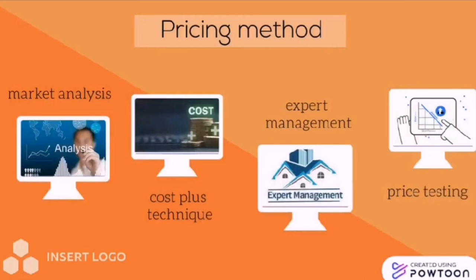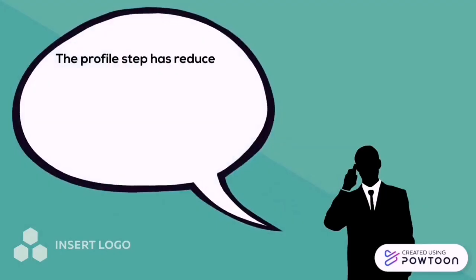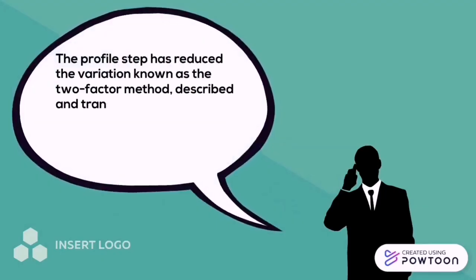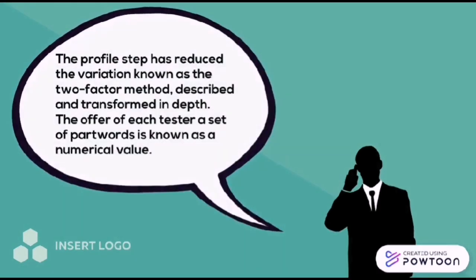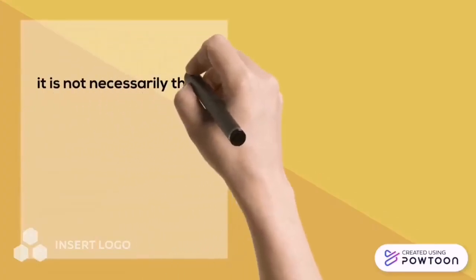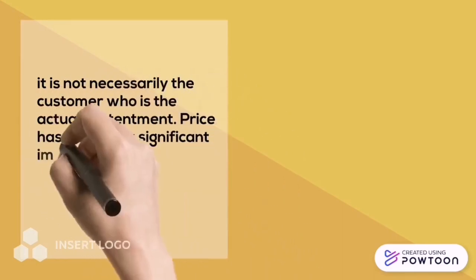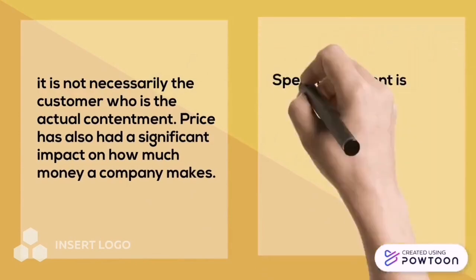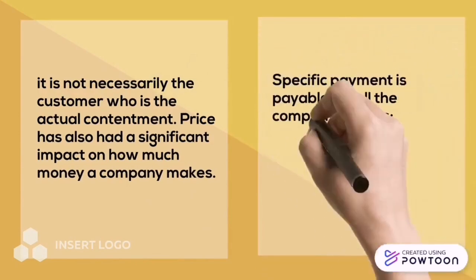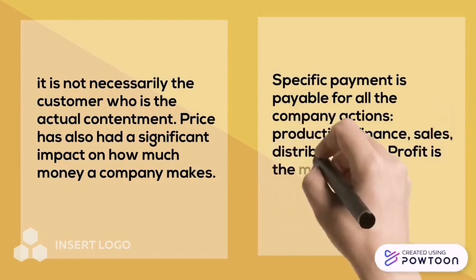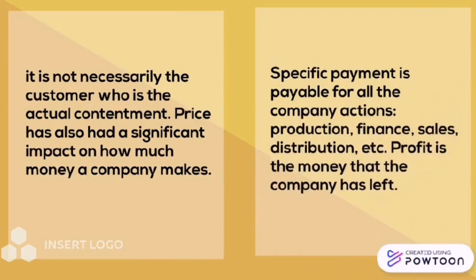The parameters that serve as tools for significance towards customers are observed. The two-factor method is described and transformed in depth. The offer of each tester's set of part words is known as a numerical value. The actual contentment price has also had a significant impact on how much money a company makes. Each company's gross revenue is calculated by multiplying the fees charged to consumers by the number of units sold.